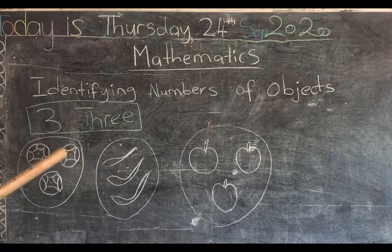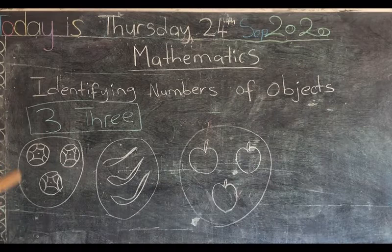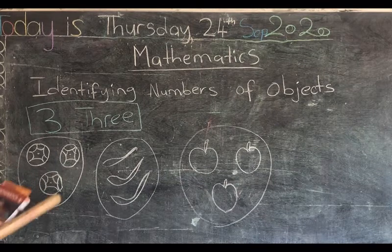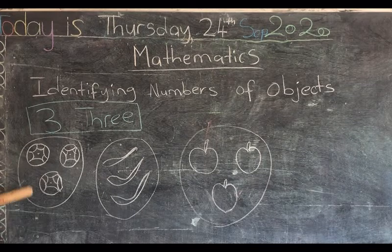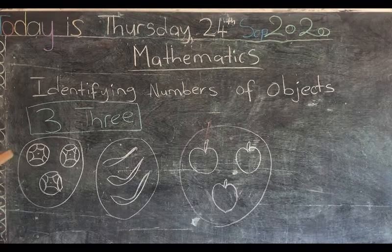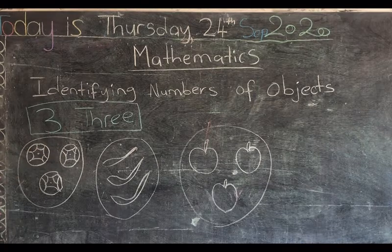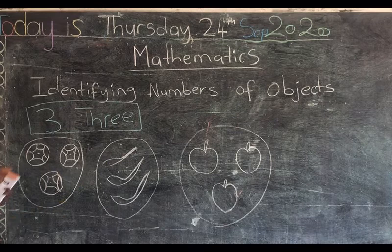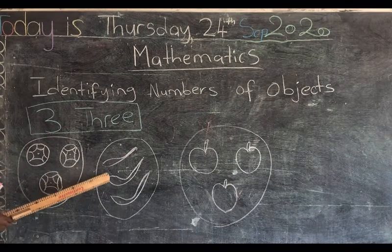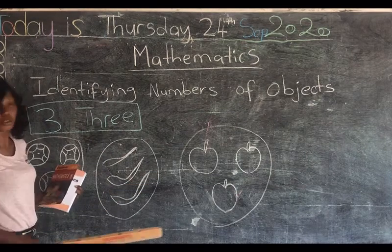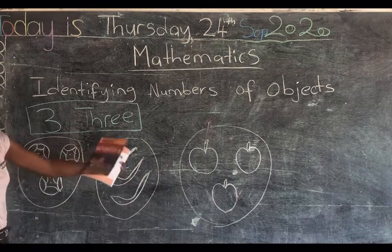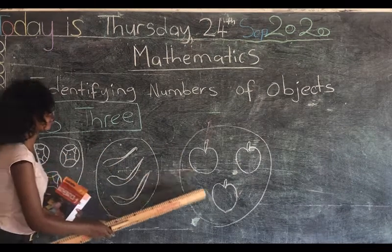In each circle here we have three objects. For example, we have balls in this circle and there are three balls: one, two, three. We have spoons in the circle — there are three spoons: one, two, three. And in this last circle there are three apples: one, two, three.